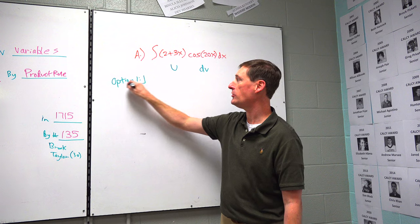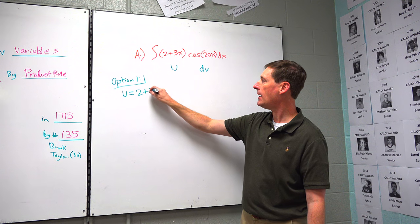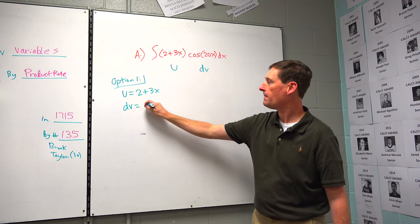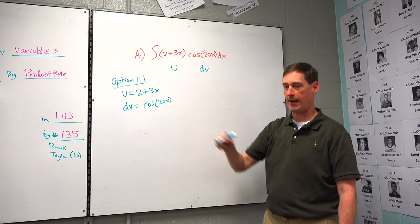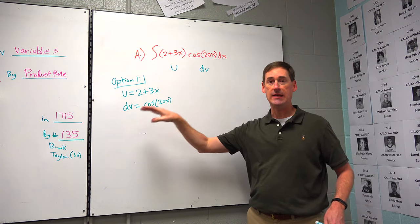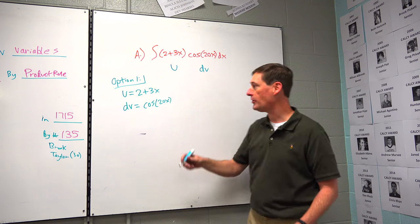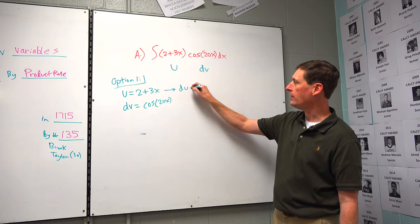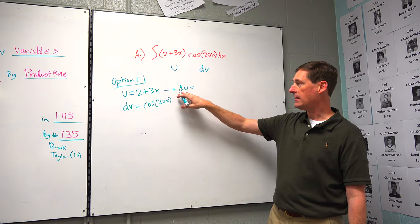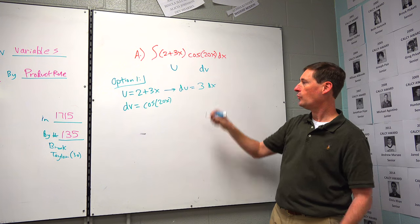I want to show you the difference so you have a strategy going forward. So u equals 2 plus 3x and dv equals cosine of 20x. Now, looking back at the formula, there's a du in it — so we've got u, but apparently we also need du. What is du? It's the derivative of u. If u is 2 plus 3x, then du is 3·dx with respect to x.